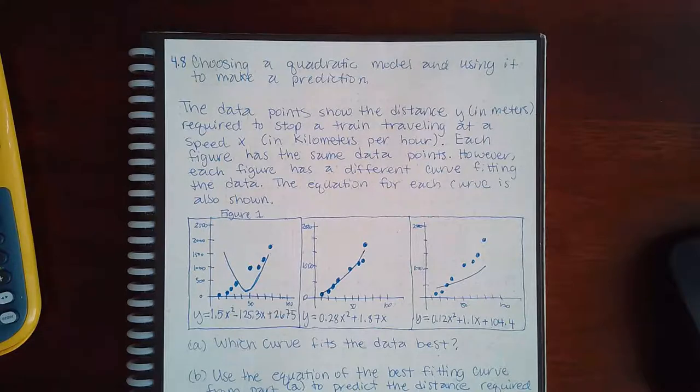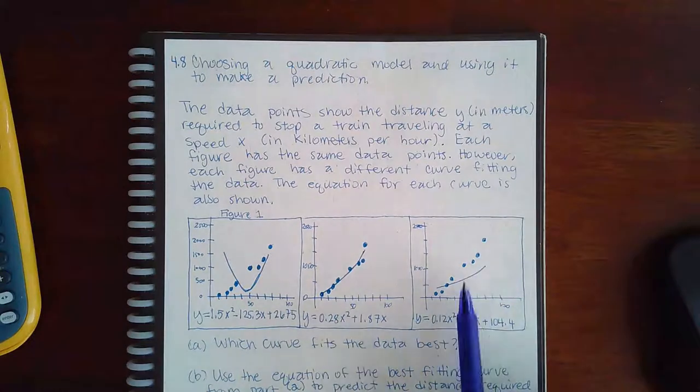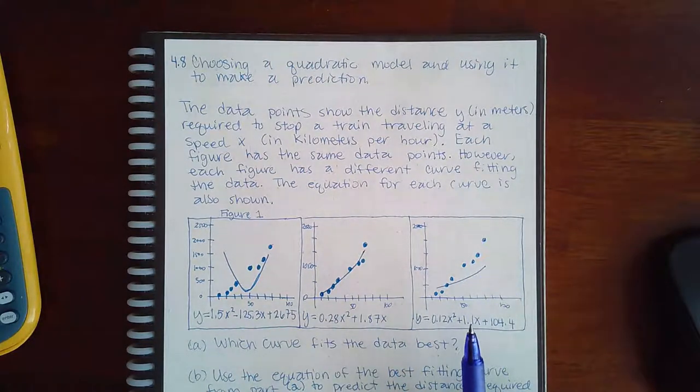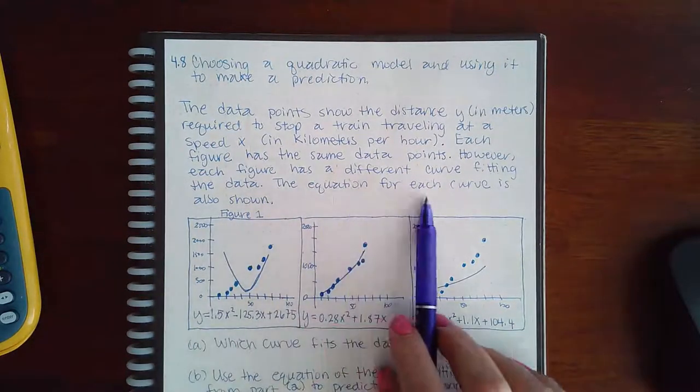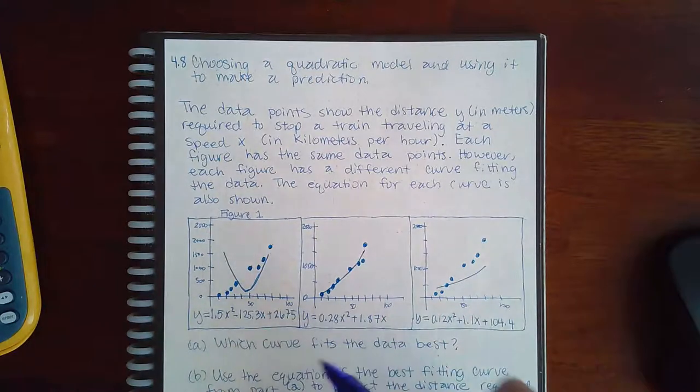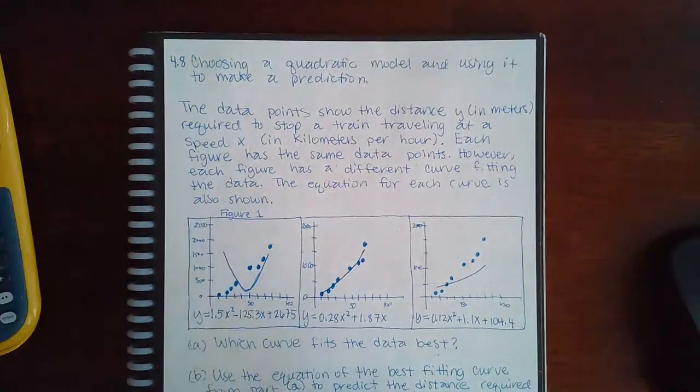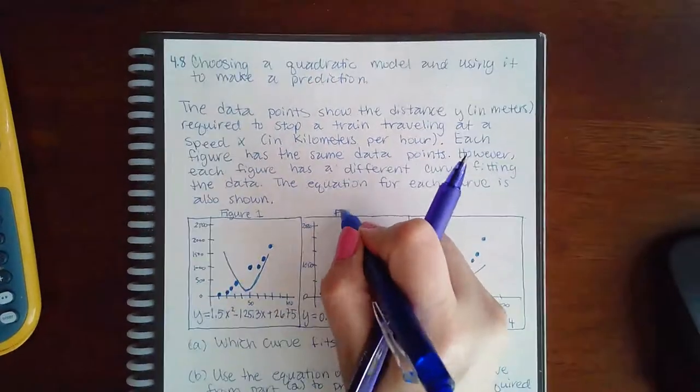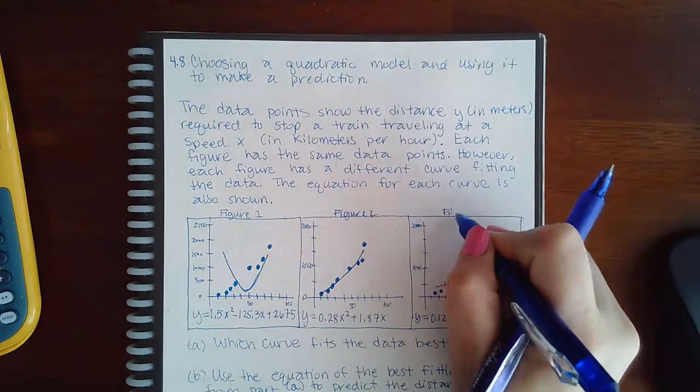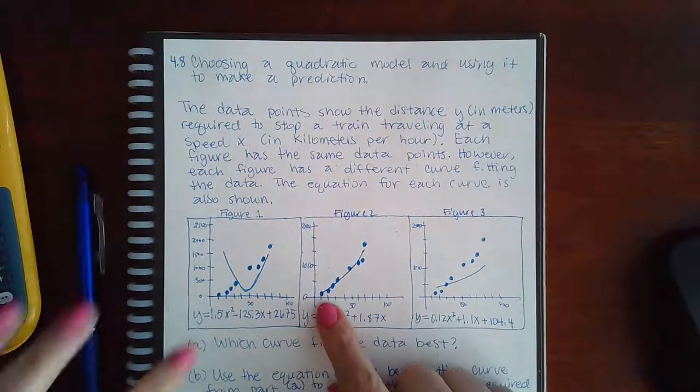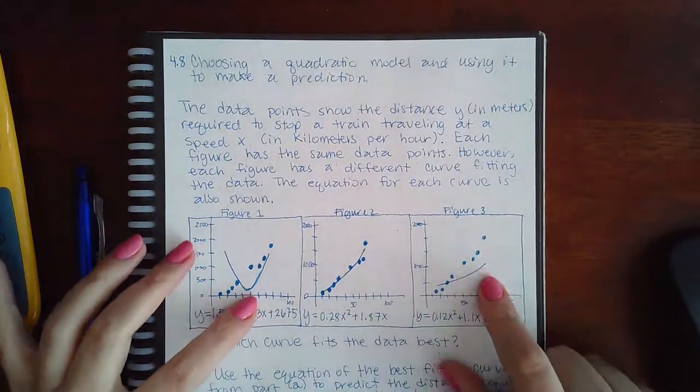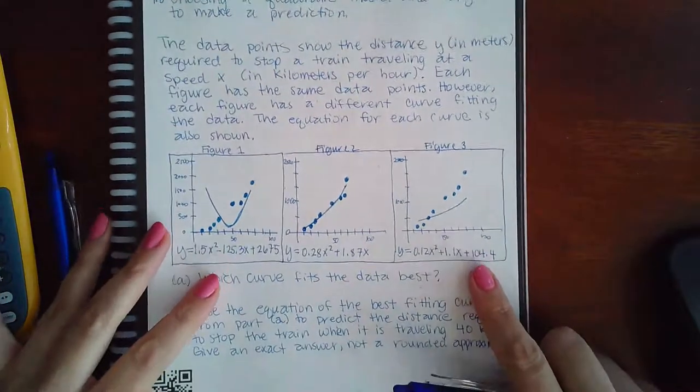Each figure has the same data points. However, each figure has a different curve fitting the data. The equation for each curve is also shown. So this one is figure 2 and this one is figure 3. I tried my best to make all the points be the same but I definitely showed the three different curves that they had there and their equations.